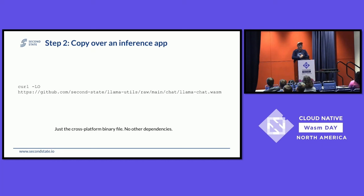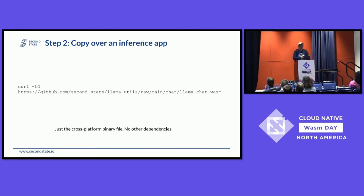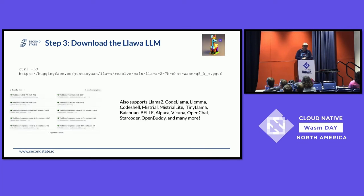I have a single compiled Wasm application written in Rust, and the whole compiled artifact is less than two megabytes. You just download it and copy it — put it anywhere on your hard drive and you'll be able to run it. It can take full advantage of whatever accelerator you have on your device. Then you download the model.